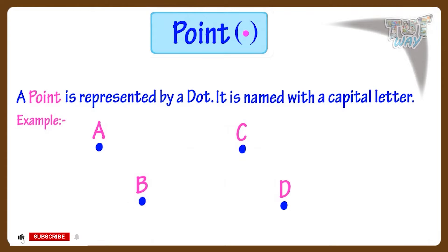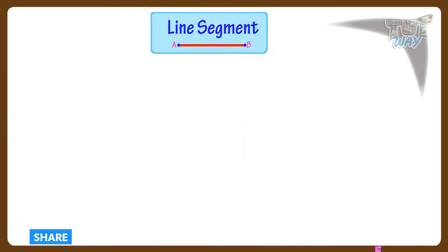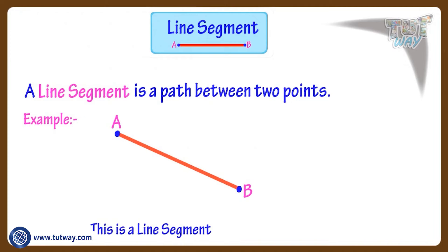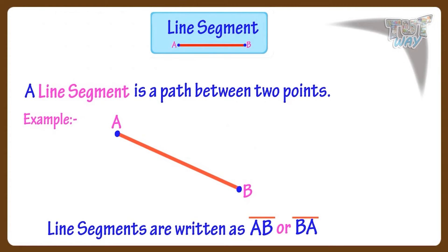Now let's see what is a line segment. A line segment is a path between two points. For example, this is line segment AB, or BA. Line segments are represented with a bar above the line name.